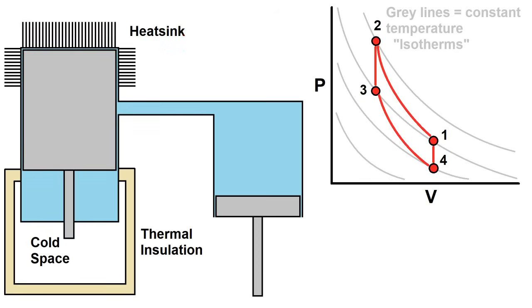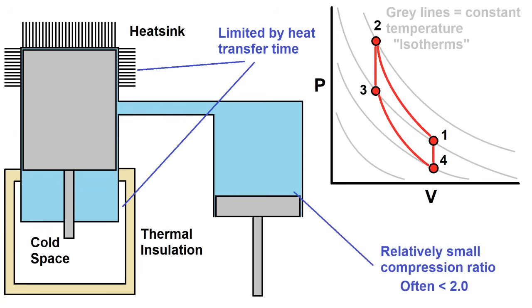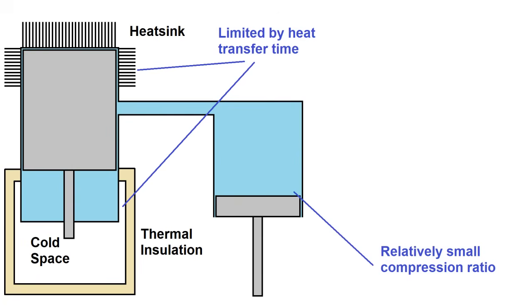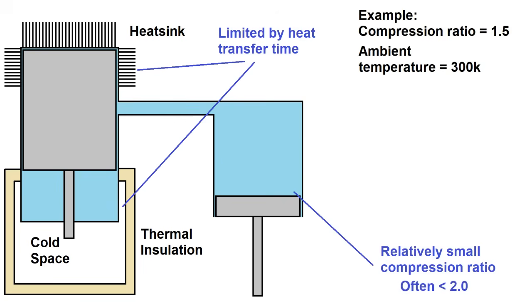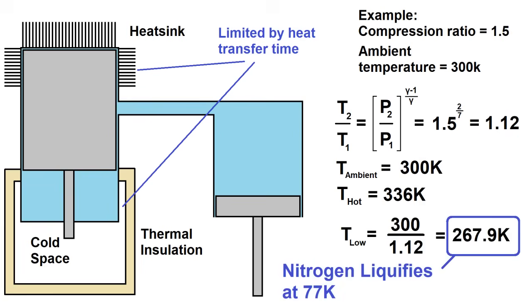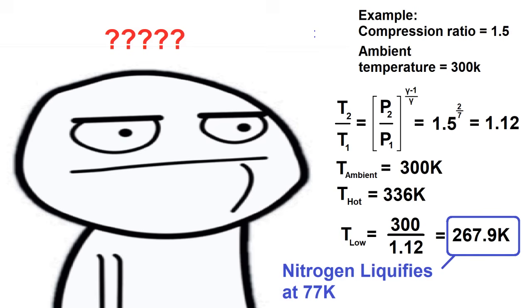Now there are some practical limitations to this setup. For one, the heat transfer to the outside world is far from perfect, and the compression ratio usually isn't all that high with commercial Sterling cooler devices, maybe in the neighborhood of 1.5 to 3. Let's take an example case where the compression ratio is 1.5. If you assume everything is isentropic, the minimum temperature you'll end up with is about 268 Kelvin, which is just a few degrees below zero C. Something doesn't add up here. These devices can go well below liquid nitrogen temperature, but that's all the way down at 77 Kelvin. Even if we pushed up the compression ratio to, say, 3 or 4, it wouldn't get anywhere near that temperature. So what's going on here?